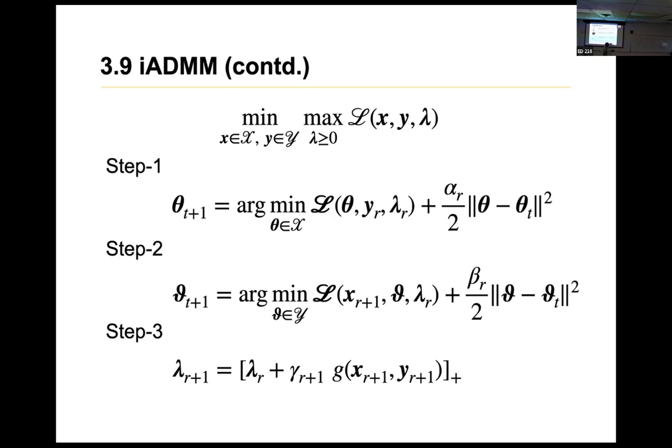And this is the inexact IADM method. Inexact alternating direction method of multipliers. It sounds very complicated, but in theory, like understanding it like this, it is not.